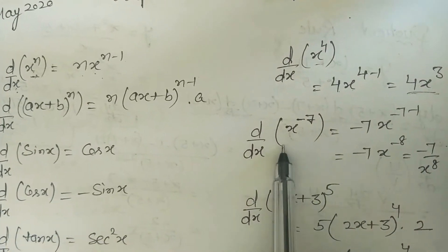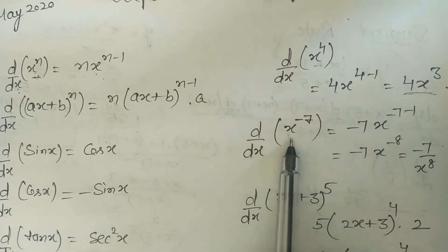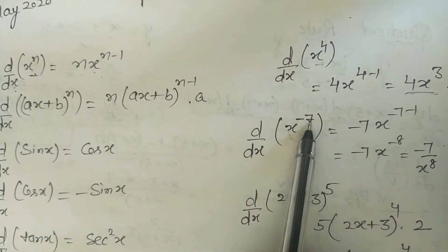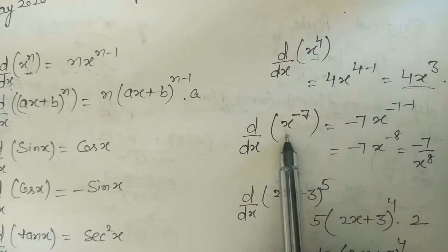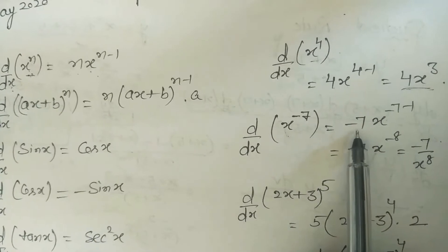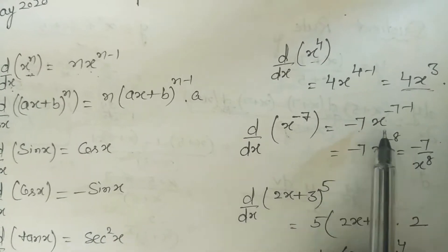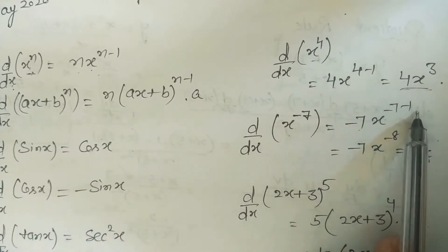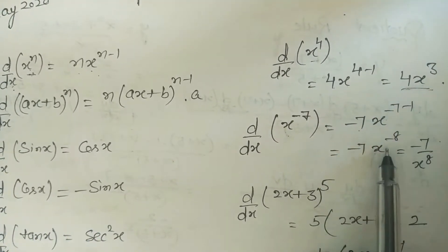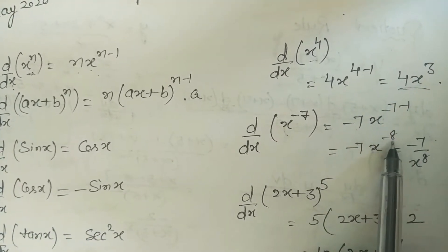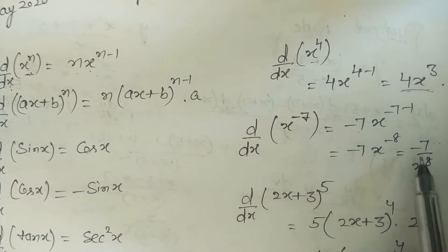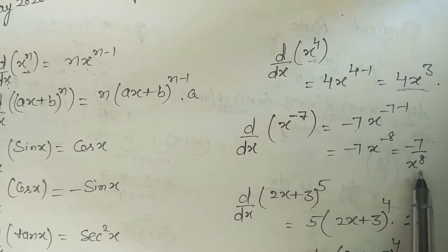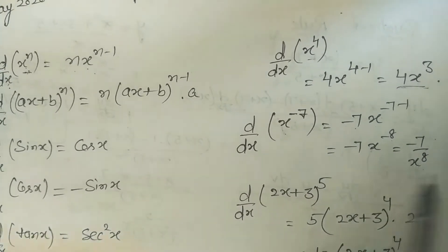Similarly, for x^(−7), the derivative is −7·x^(−7−1) = −7·x^(−8), which we write as −7 upon x^8.